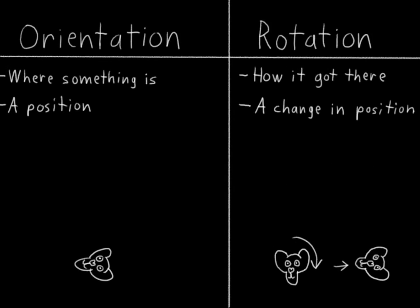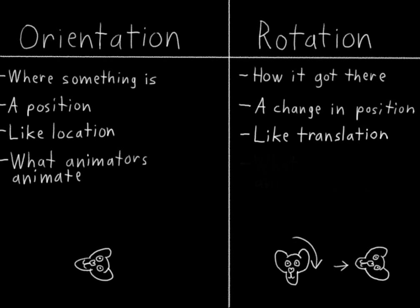So orientation is like location, it's simply a position. And rotation is like translation, it's a change in position. And if we think about animators for a moment, they're really animating the locations and orientations of objects, not their translations and rotations. But they're using translations and rotations to specify those locations and orientations.